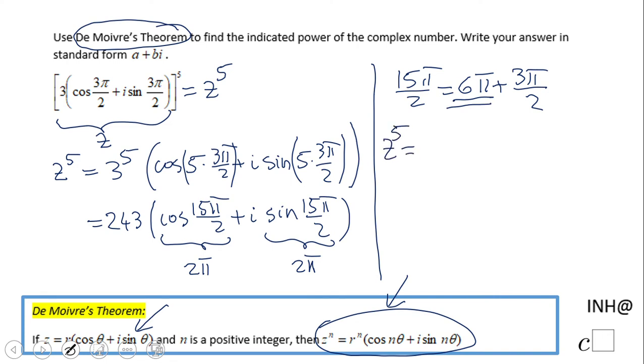So our complex number will be 243, and like I said, now we're gonna have cosine of 3π over 2 plus i sine of 3π over 2. That is the answer, the simplest answer in this polar form.